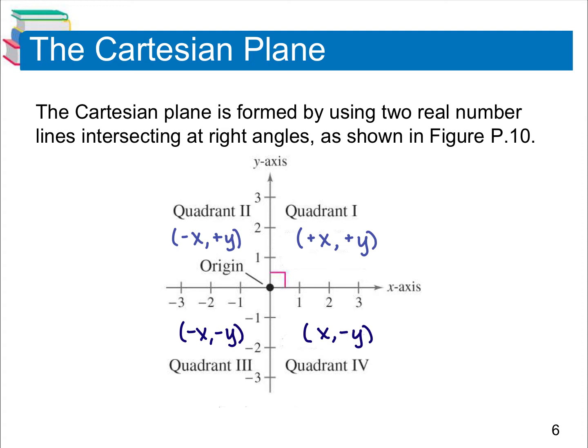If you start at quadrant 1 and go counterclockwise, it gives you 1, 2, 3, 4. The ordered pairs in quadrant 1 — both your x and your y are going to be positive. In quadrant 2, your x is going to be negative, your y is going to be positive. In quadrant 3, both of them are going to be negative. And in quadrant 4, your x is positive and your y is negative.